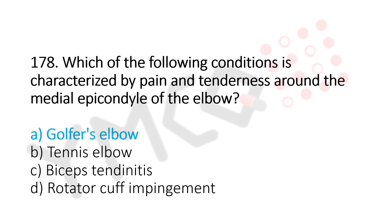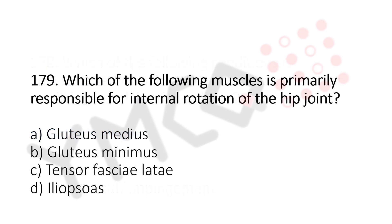Let's move to question number 179. Which of the following muscles is primarily responsible for internal rotation of the hip joint? Option A, gluteus medius. Option B, gluteus minimus. Option C, tensor fascia latae. Option D, iliopsoas. And the answer is Option B, gluteus minimus.